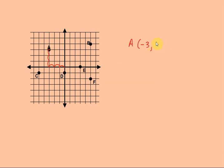To get to point B, I start at the origin and stay on the lines. I go to the right 1, 2, 3, 4, 5 spaces — that's a positive 5. Then I go up 1, 2, 3, 4 spaces — that's up, so it's a positive 4. So point B is at 5, 4.